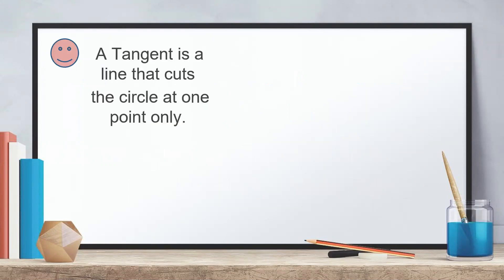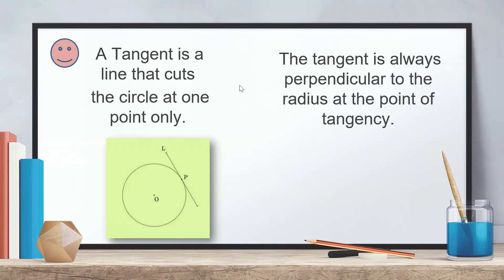When you hear the word tangent, what comes to mind? A tangent is a line that cuts the circle at one and only one point. As you see in the figure, we have a circle C of center O; line LP cuts the circle at one and only one point P, and this point is called the point of tangency.